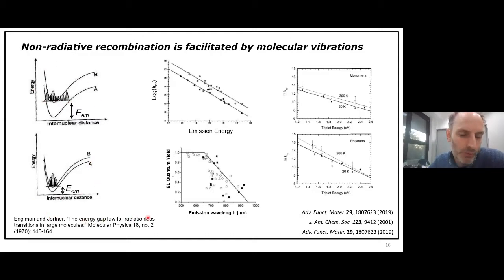This is the explanation given to this effect. It's called the energy gap law for radiationless transitions in large or in organic molecules. The reason why a low excitation energy, as drawn here, you have more non-radiative recombination than when you have a high excitation energy,